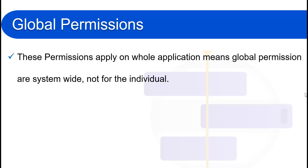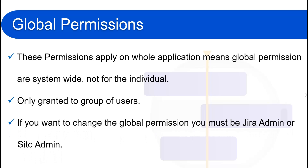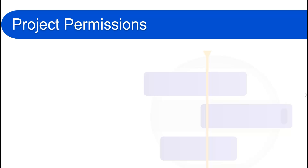Global permissions apply to the whole application — they are system-wide, not for individuals. We can grant global permissions to groups of users only. If you want to change the global permissions, you must be a Jira admin or a site admin. If you are not a Jira admin or a site admin, you cannot change the global permissions.